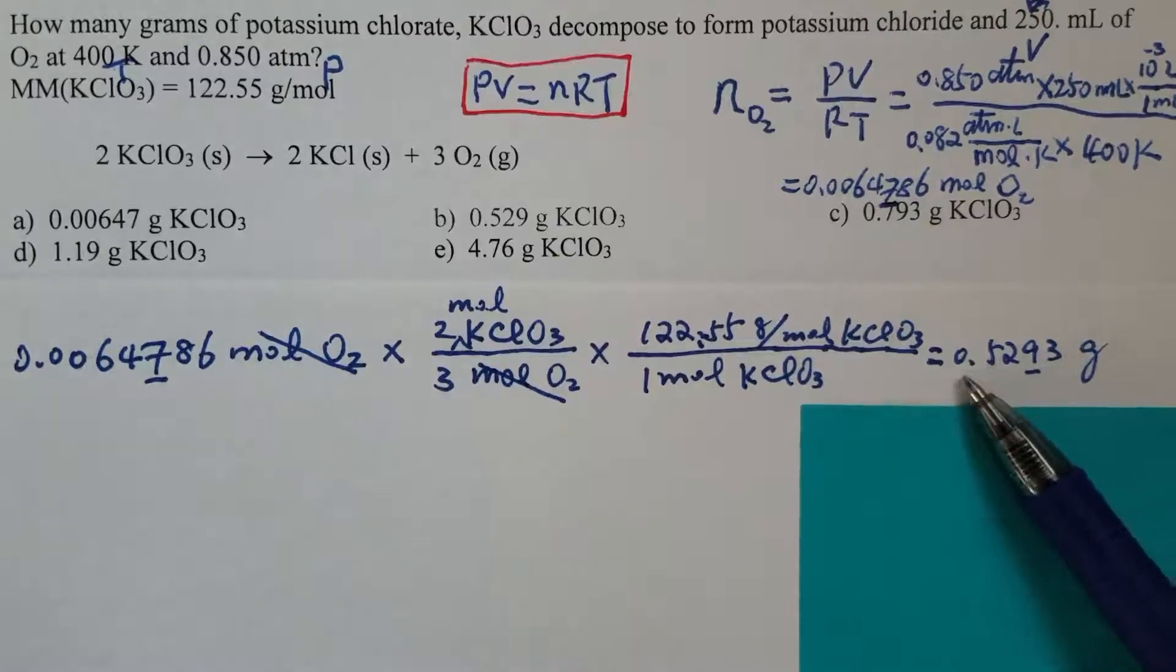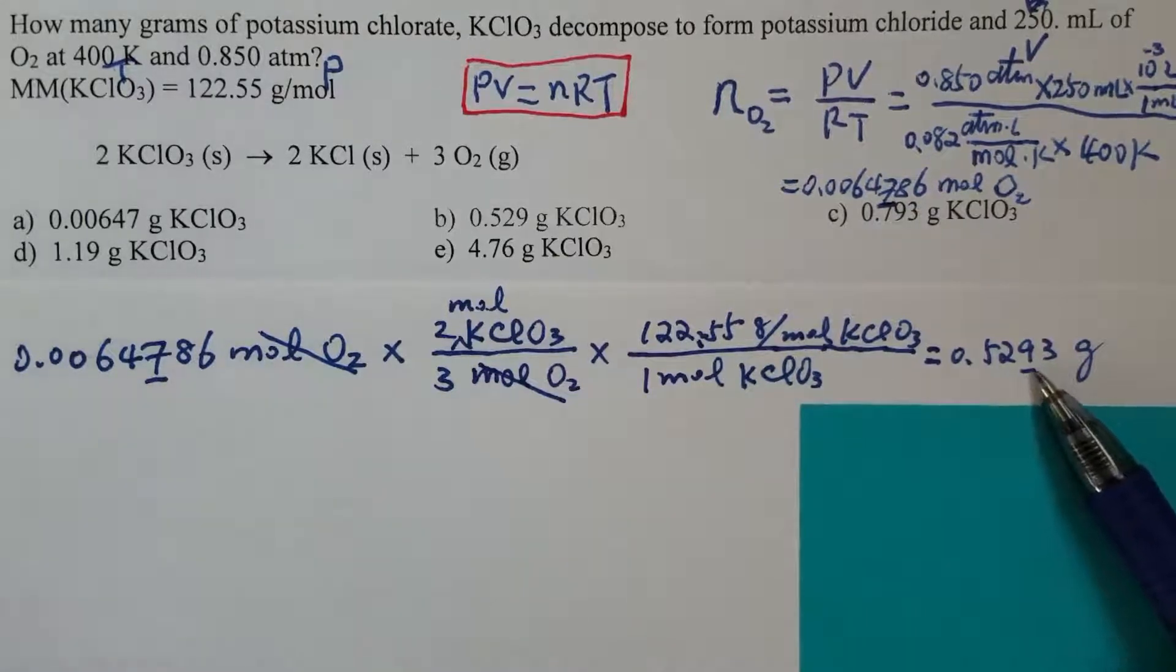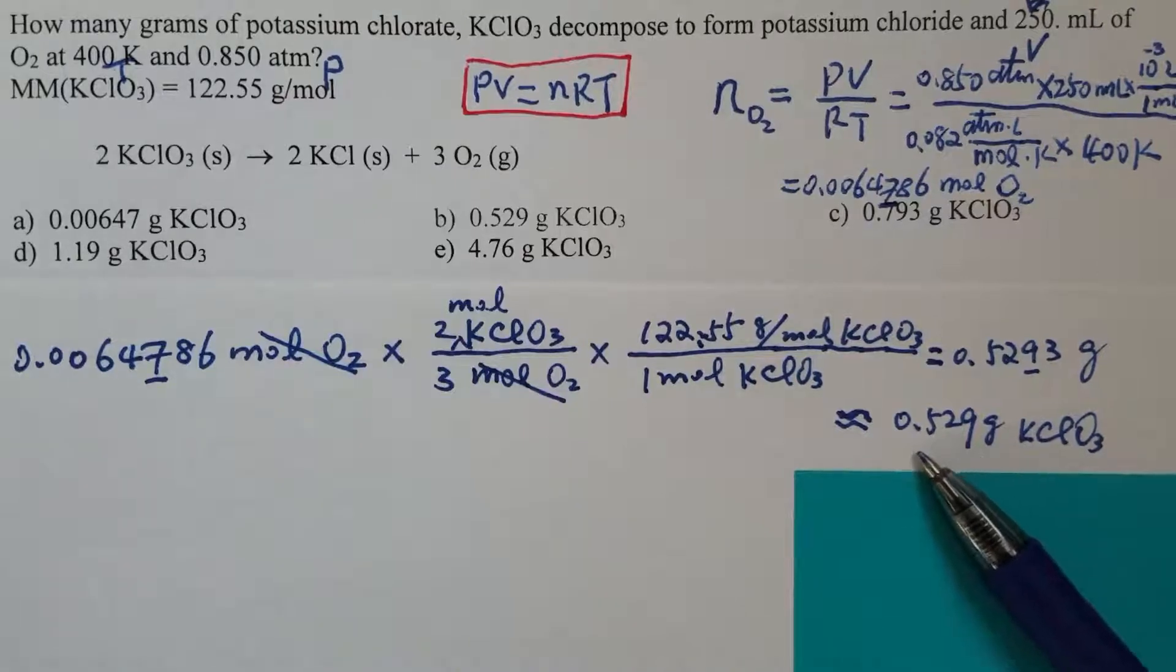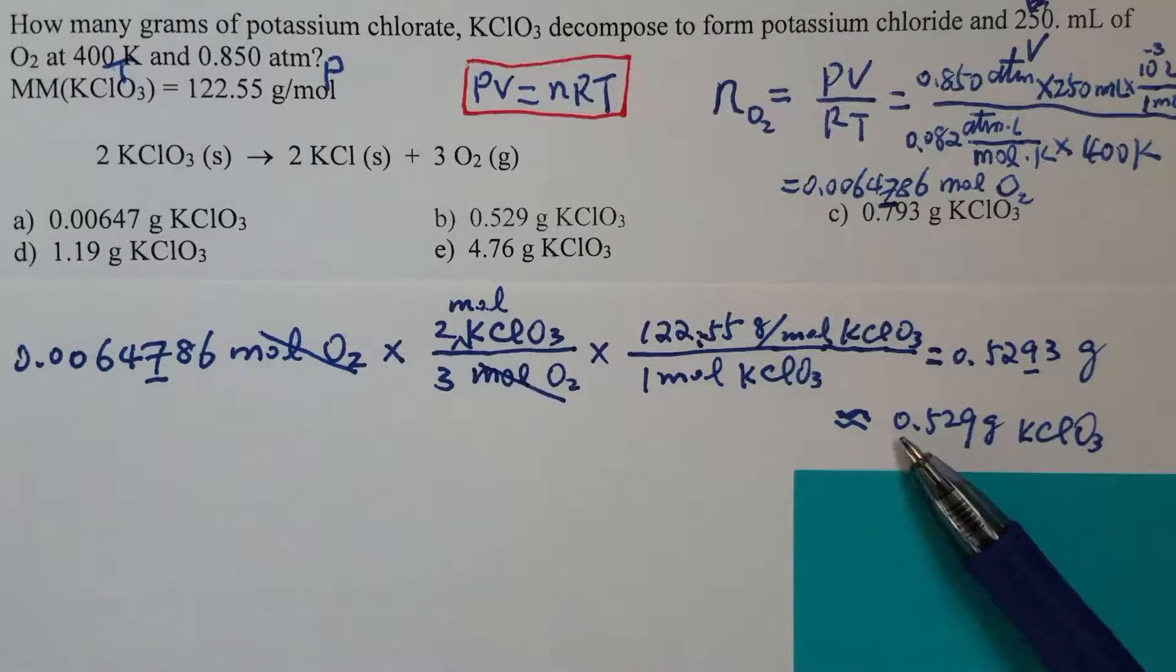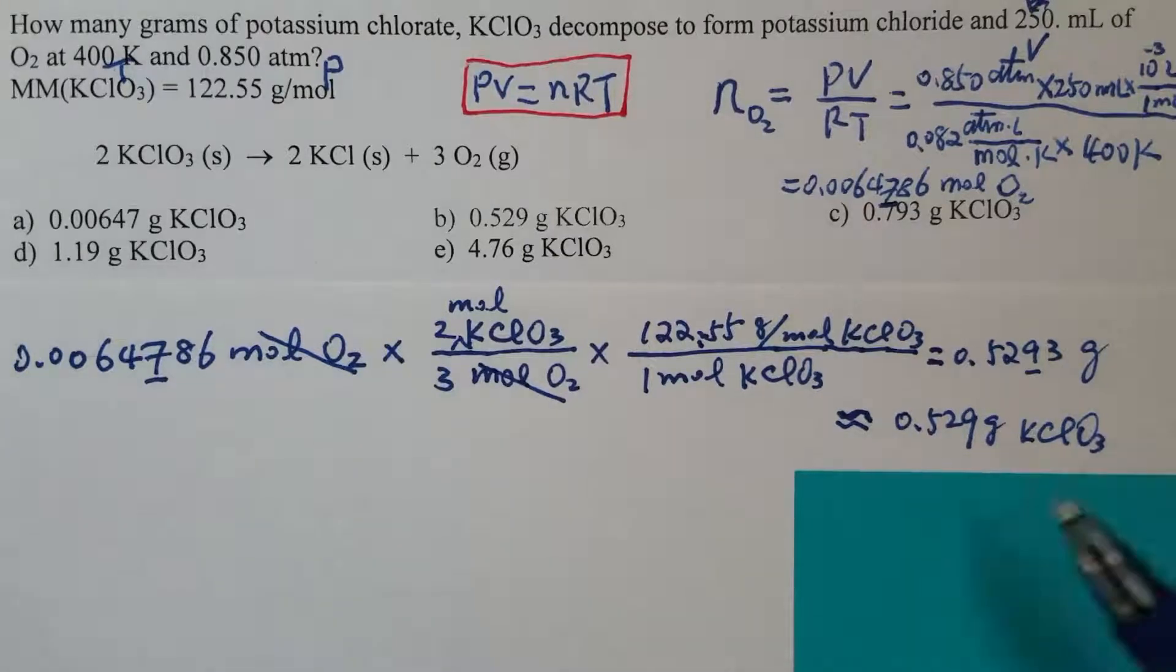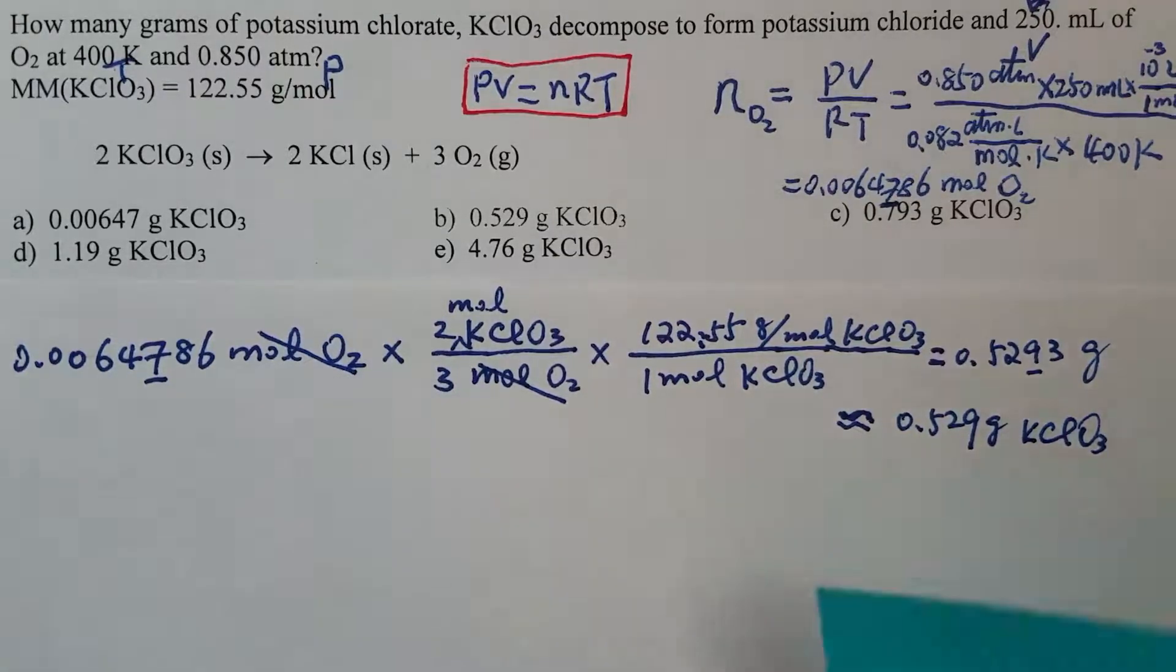Again, I underlined the third digit, also the last digit in the significant figure. After the round up, we will end up with 0.529 grams potassium chlorate.